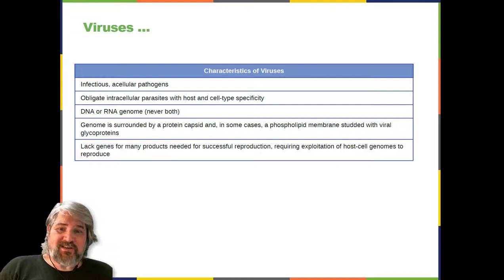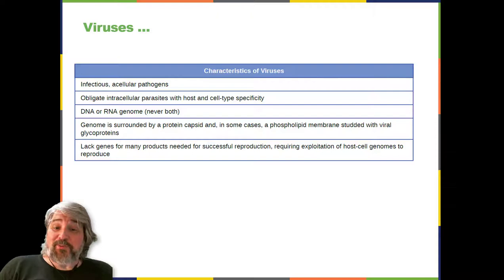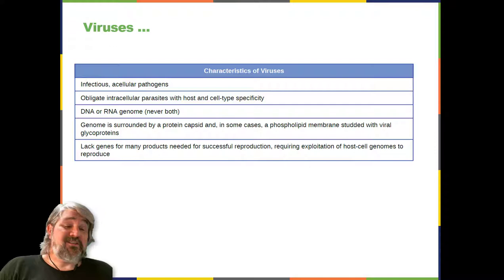Viruses are infectious acellular pathogens that are obligate intracellular parasites with host and cell type specificity. They have a DNA or RNA genome, never both. The genome is surrounded by a protein capsid and, in some cases, a phospholipid membrane studded with viral glycoproteins. Viruses lack genes for many products needed for successful reproduction, requiring exploitation of host cell genomes to reproduce.